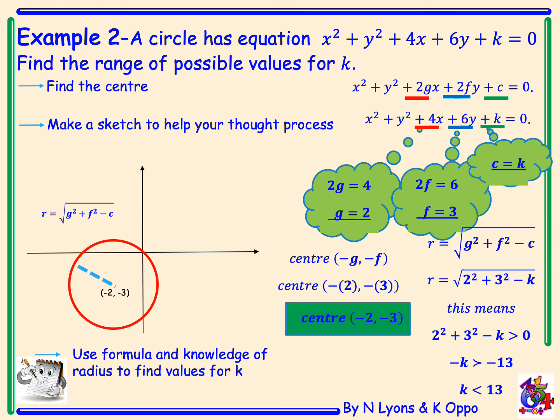For the radius to exist, we need g squared plus f squared minus c to be greater than 0. Therefore 2 squared plus 3 squared minus k must be greater than 0. So 4 plus 9 minus k is greater than 0, which rearranged gives negative k greater than negative 13. Therefore k is less than 13, so the range of values for k is k less than 13.